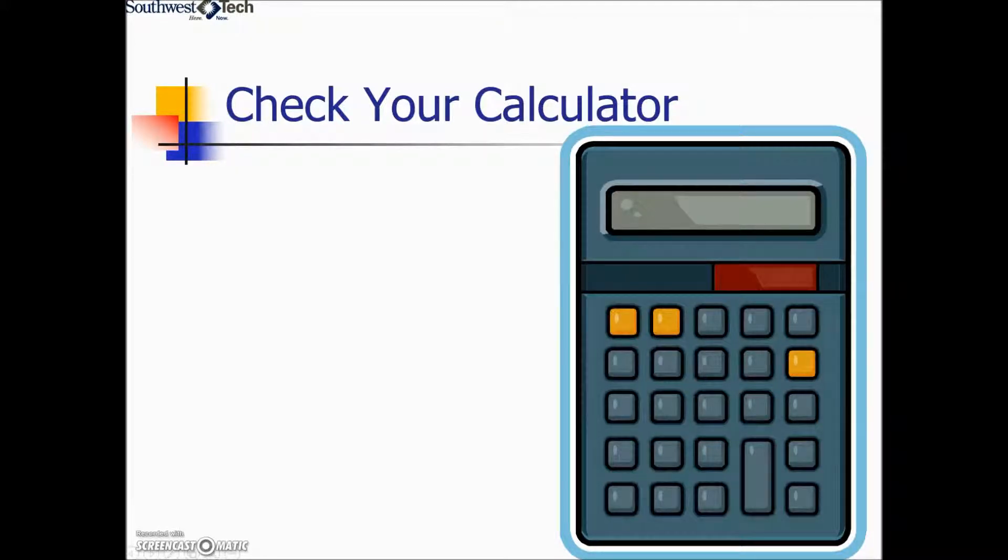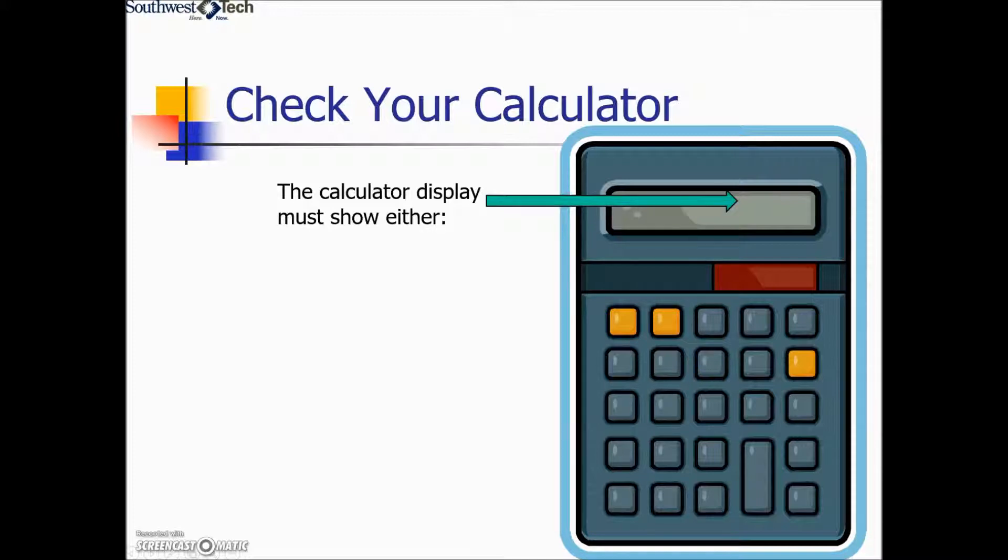First though, we want to make sure that your calculator is set up for angles measured in degrees. We have other ways of measuring angles, but we will only be working with degrees here. One way is to look at the display. Some calculators will either put a D or a DEG in the display so that you can clearly see whether it's in degree mode versus some other angle measurement. Other calculators may require you to go into a menu to see whether it's calculating in degrees or not.